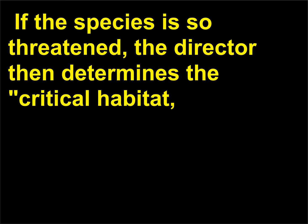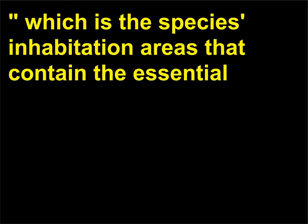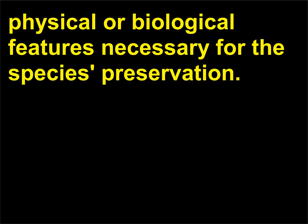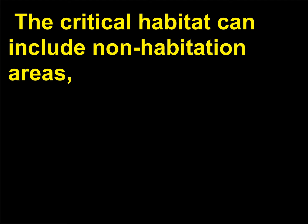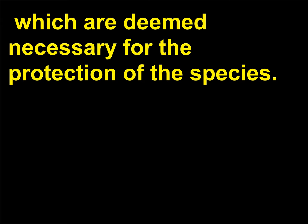If the species is so threatened, the director then determines the critical habitat — the species' inhabitation areas that contain the essential physical or biological features necessary for the species' preservation. The critical habitat can include non-habitation areas which are deemed necessary for the protection of the species.